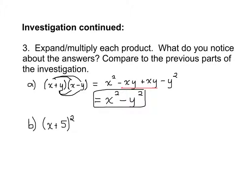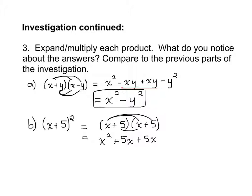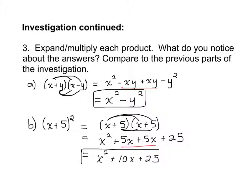For part b we have x plus 5 squared. Anything squared is multiplied by itself, so we write x plus 5 times x plus 5. Using the same multiplication process: x times x is x squared, x times 5 is plus 5x, 5 times x is another plus 5x, and 5 times 5 is plus 25. Combining like terms, we get x squared plus 10x plus 25. This is going to be a special pattern for factoring — if we can recognize this pattern, we can factor a trinomial like this more easily, because we can get a factor squared as our answer.